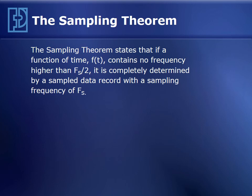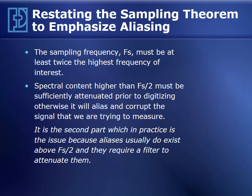Fortunately, we have the sampling theorem, called the Nyquist theorem or the Shannon sampling theorem. It states that if a function of time contains no frequency higher than half the sampling frequency, then it is completely determined by the sampled data record. To restate: the sampling frequency must be at least twice the highest frequency of interest, and any spectral content higher than half the sampling frequency must be sufficiently attenuated prior to digitizing. That second part defines the need for an anti-aliasing low-pass filter.